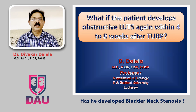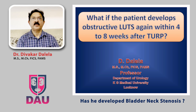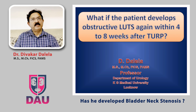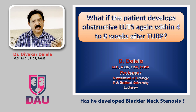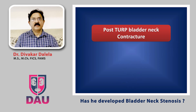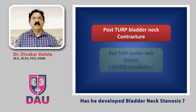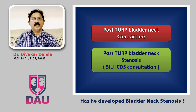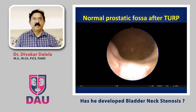Hello friends. In this series of talks on post-TURP obstructive lower urinary symptoms — when a patient develops new onset obstructive lower urinary symptoms — my previous talk focused on urethral stricture: how to diagnose and treat it. In this video I am concentrating on narrowing at the level of the bladder neck — has the patient developed bladder neck stenosis? Previously this was called post-TURP bladder neck contracture, but today the SIU-ICDS consultation group has specified that we call it post-TURP bladder neck stenosis, so that is the term we shall use henceforth.